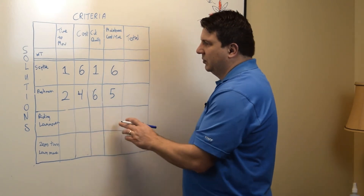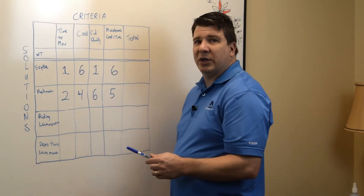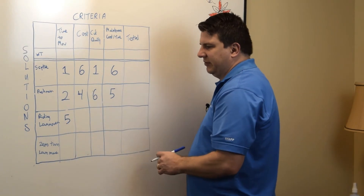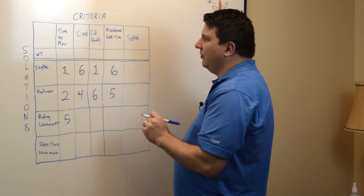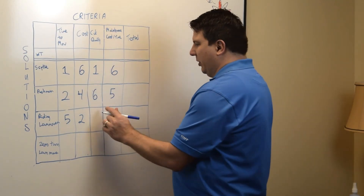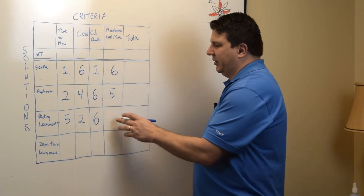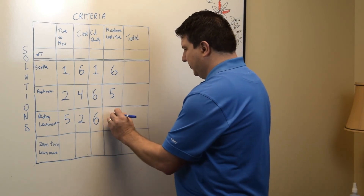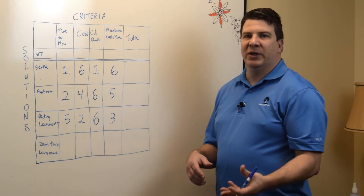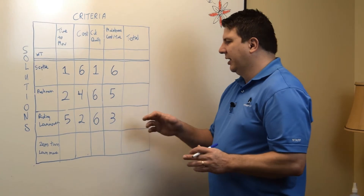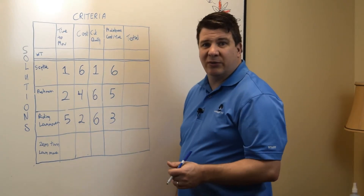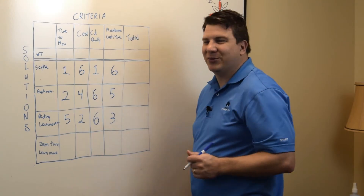Riding lawnmower — compared to a push mower, I could probably do four to five times better in terms of mowing speed, so I'm going to give that a five for time to mow. I know there are things out there faster, like the zero turn. My cost is going to be quite considerable, so I'm going to give that a two. Cut quality is going to be good. Maintenance — not bad, but let's say a three because there's more to it: oil changes, rust on the deck, sharpening blades which you'll probably have to replace three or four times a year, and there are usually three blades on it.